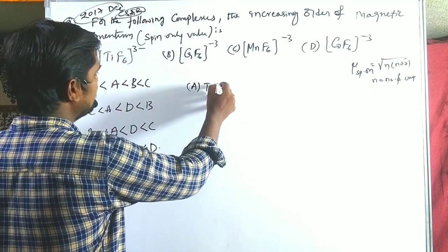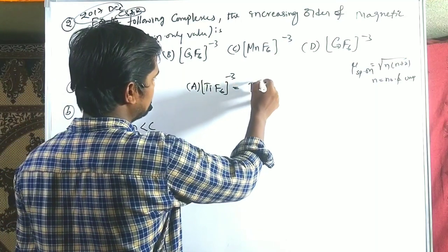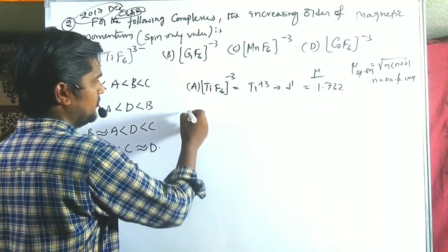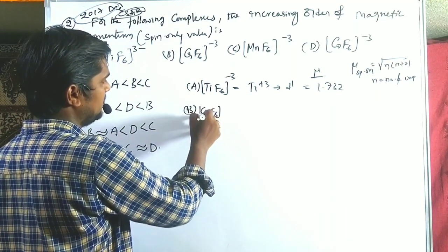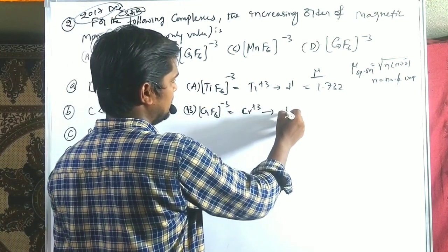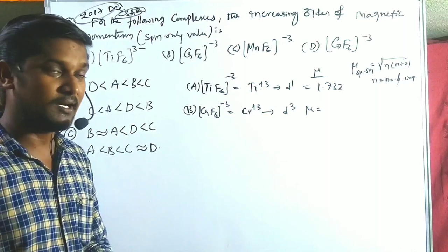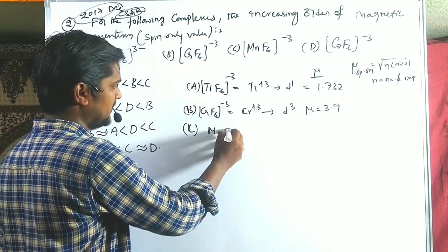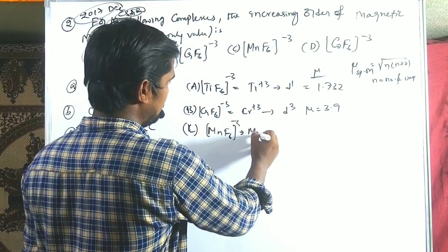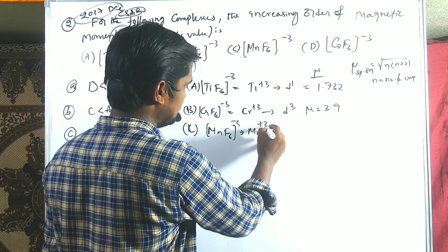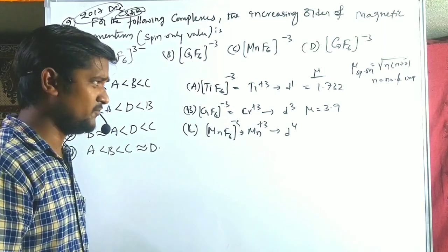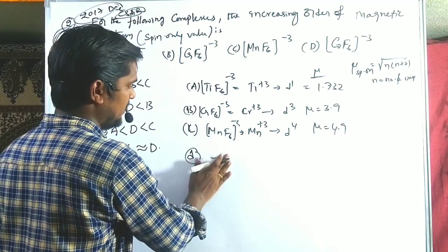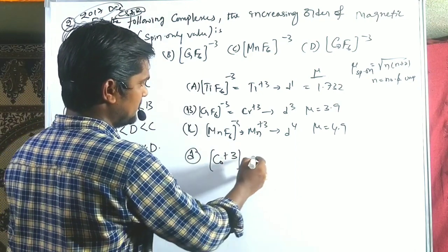Option A is [TiF₆]³⁻, meaning Ti³⁺, which has one electron — μ = 1.732 BM. Option B is [CrF₆]³⁻, meaning Cr³⁺ with d³ configuration and three unpaired electrons — μ = 3.9 BM. Option C is [MnF₆]³⁻, meaning Mn³⁺ with d⁴ configuration — μ = 4.9 BM.